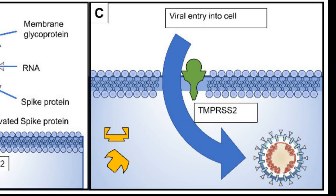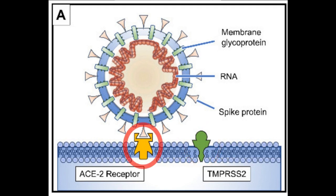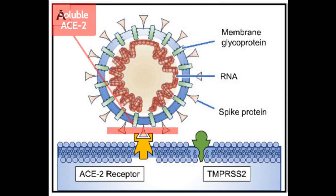Possible options for vaccines and treatment are: one, to block TMPRSS2 activity; two, block the ACE2 receptor; and three, create competition with membrane-bound ACE2 receptors by delivering excessive soluble or circulating ACE2 to intercept the virus before it attacks the cell.